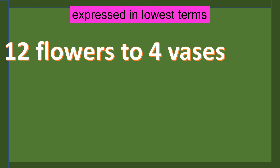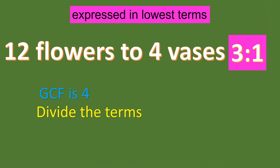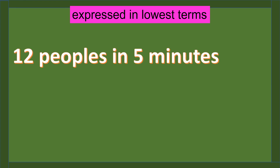Another example: 12 flowers to 4 vases, which is 12 is to 4. The GCF is 4. So, 12 divided by 4 equals 3, and 4 divided by 4 equals 1. The lowest term is 3 is to 1. Next: 12 people in 5 minutes, which is 12 is to 5. Since 12 and 5 share no common factor other than 1, this ratio is already in its simplest form.